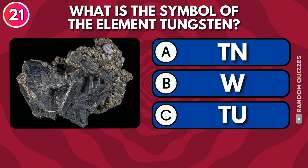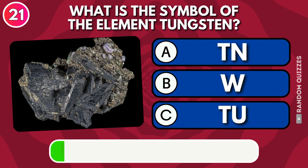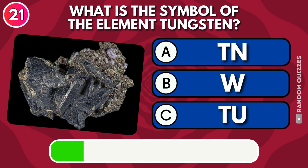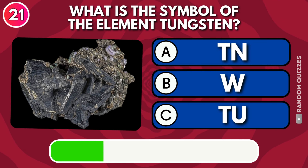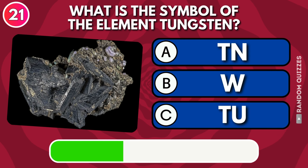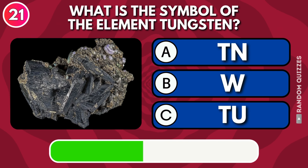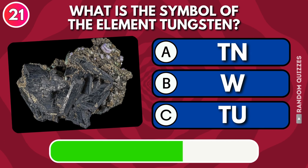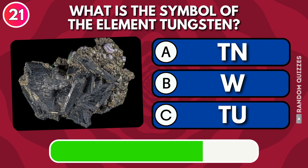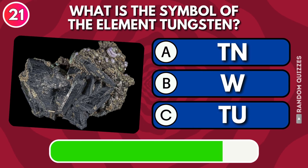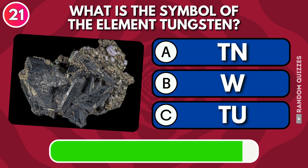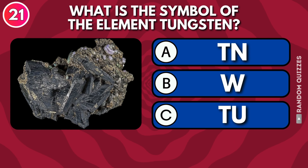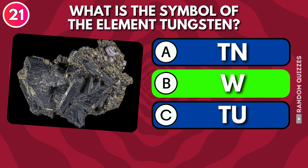What is the symbol of the element tungsten: Tn, W, or T? Answer: W.